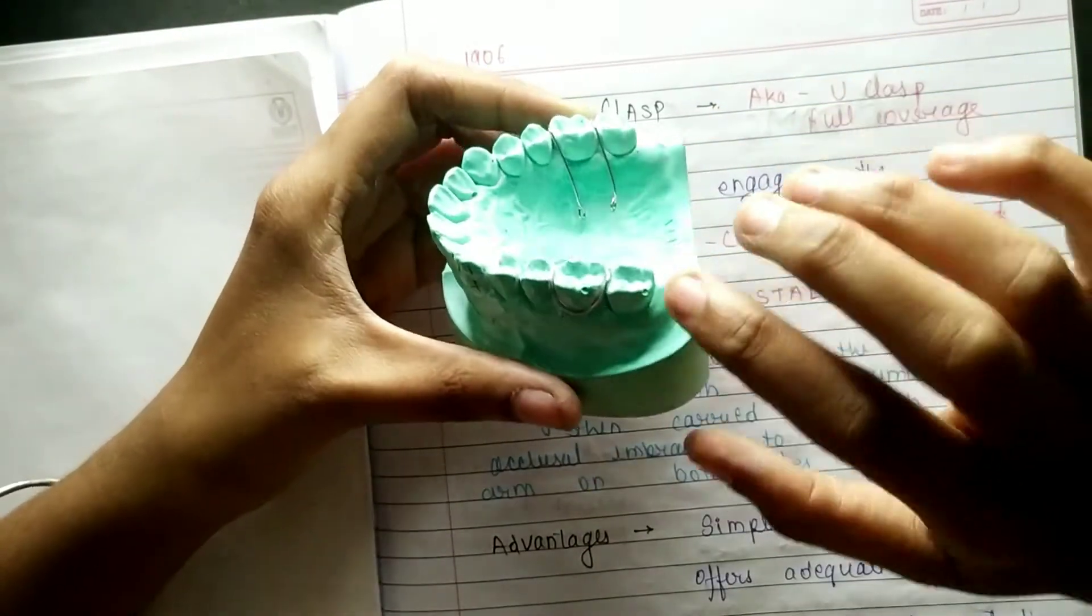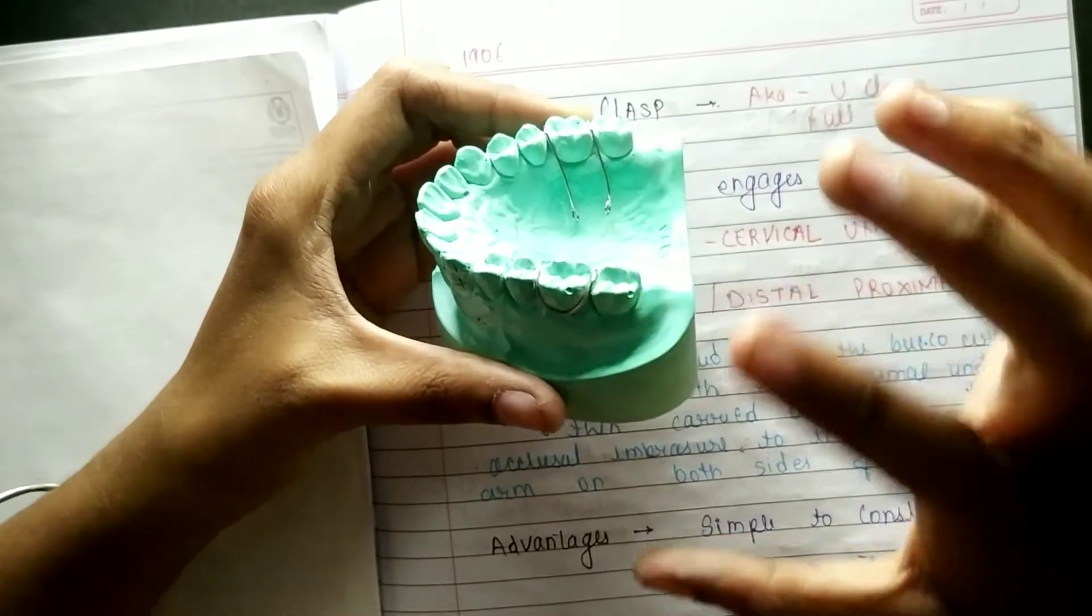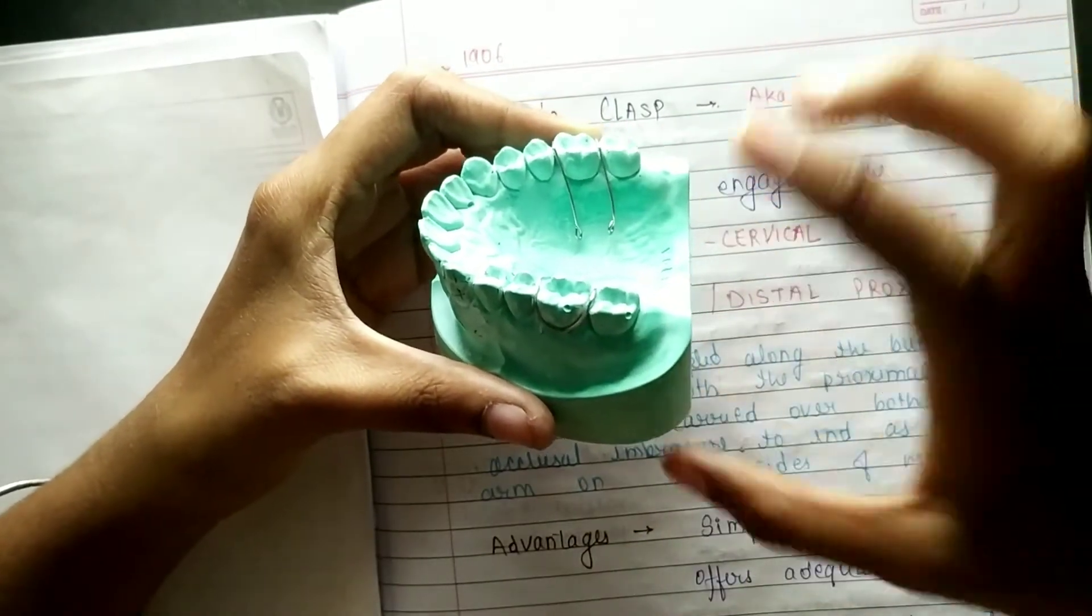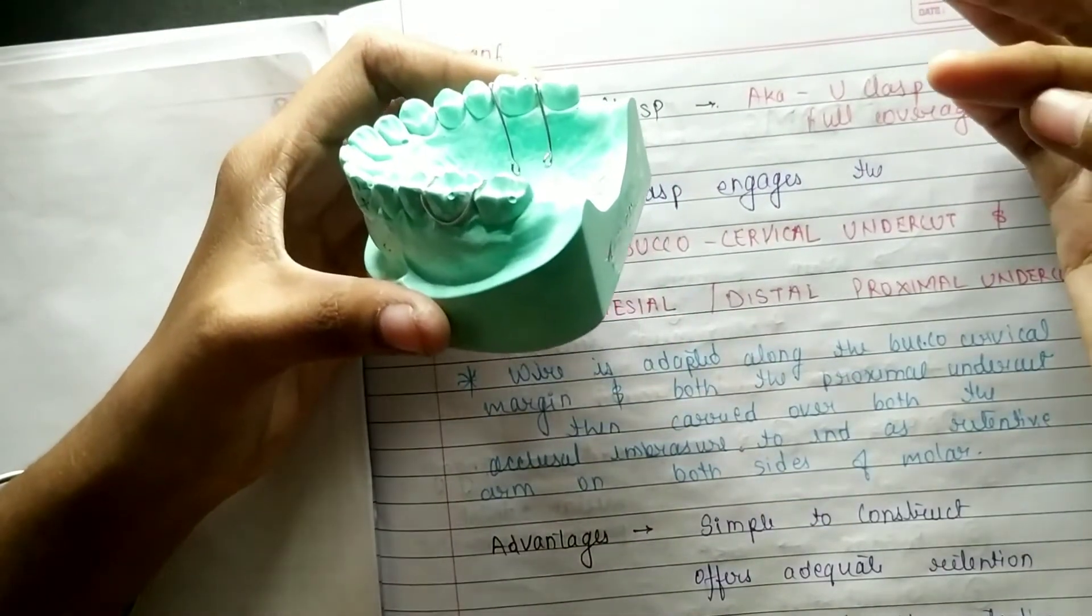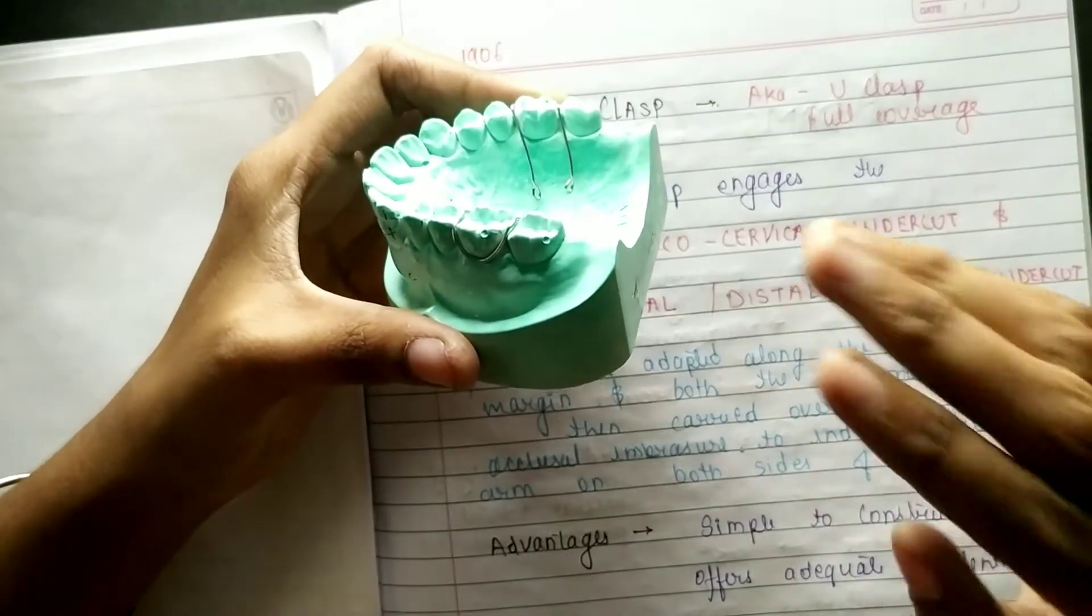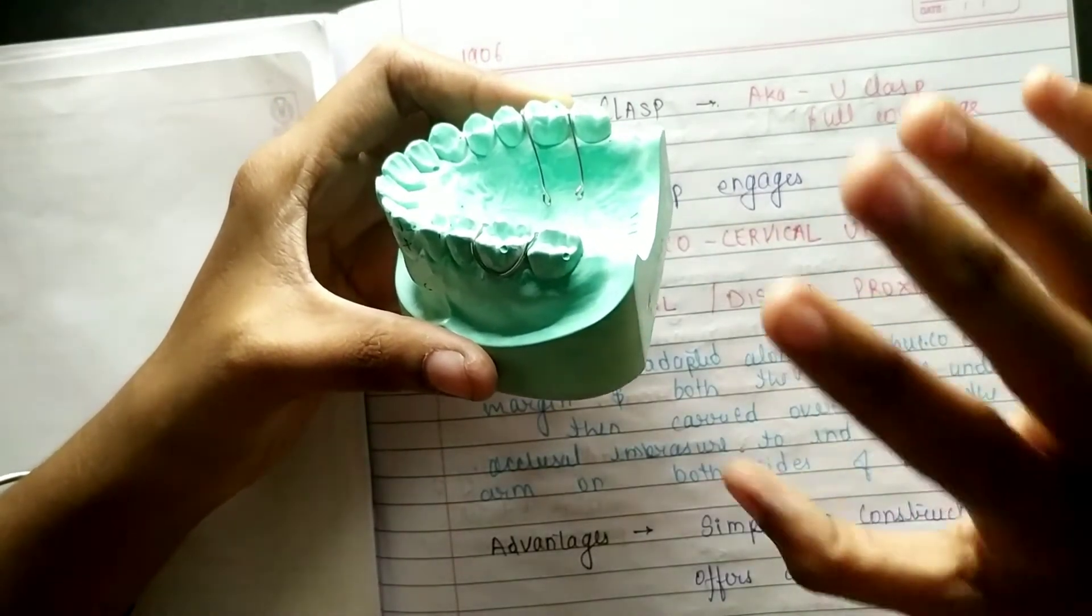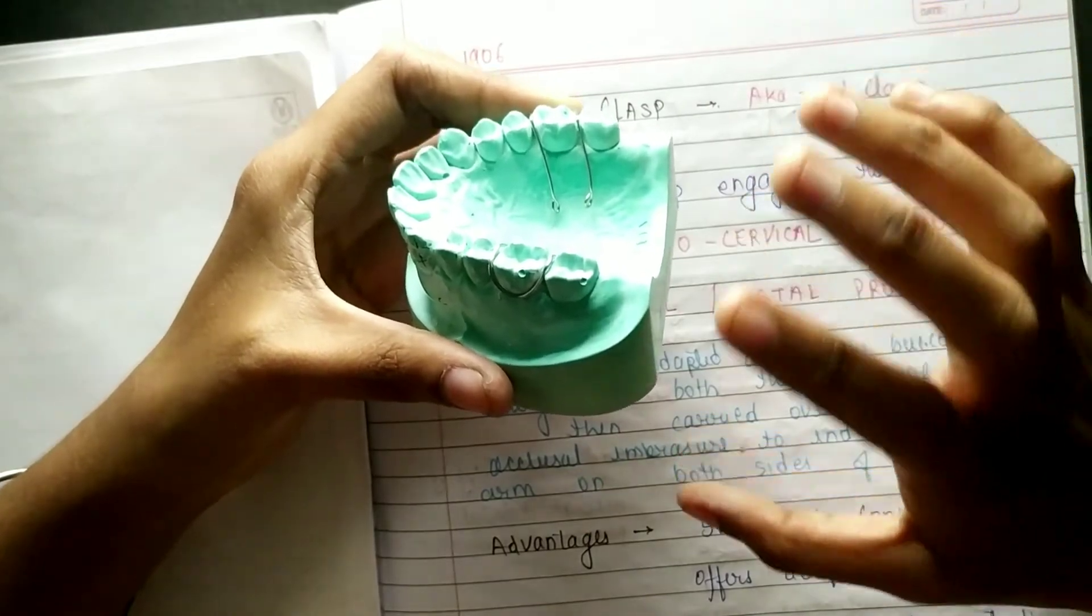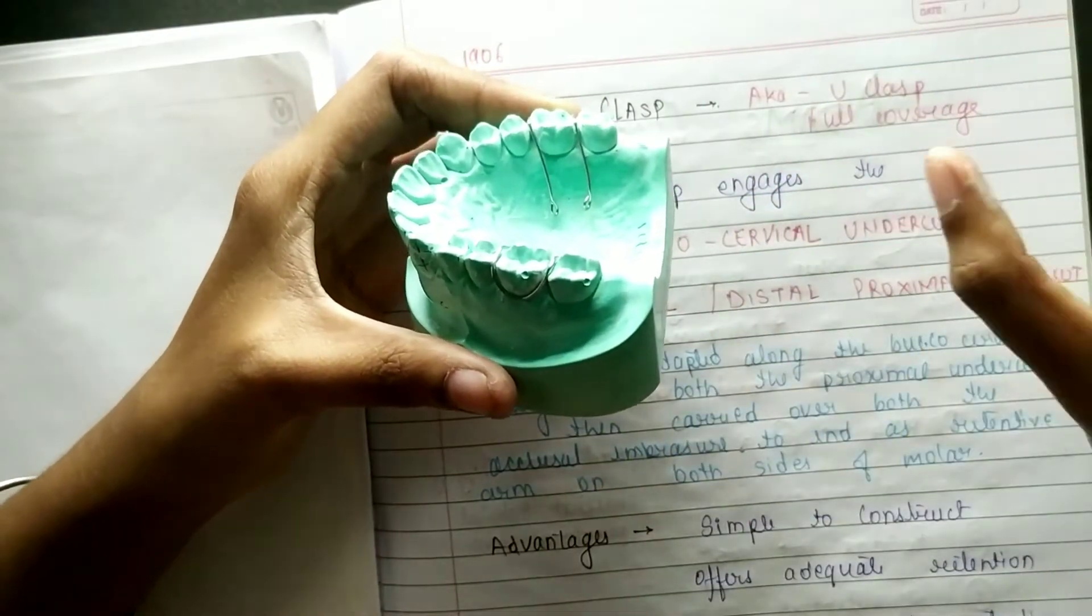Buccal region and mesial and distal region, we have studied undercuts. Buccal is also going to cervical undercuts and mesial distal proximal undercuts. So this is the full coverage clasp.